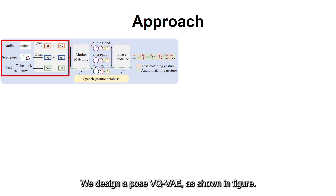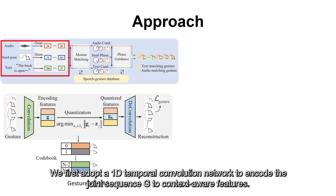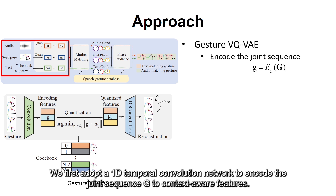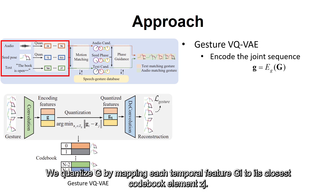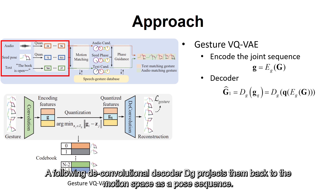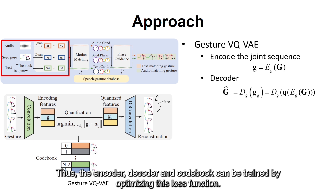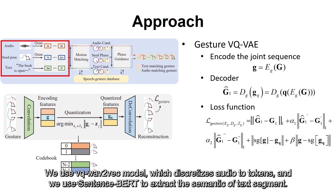We design a pose VQVAE as shown in the figure. We first adopt a 1D temporal convolution network to encode the joint sequence G to context-aware features. We quantize G by mapping each temporal feature G_i to its closest codebook element Z_j. A following convolutional decoder D_G projects them back to the motion space as a pose sequence. The encoder, decoder, and codebook are trained by optimizing a loss function. We use the VQ-WAV2VEC model which discretizes audio to tokens, and we use Sentence-BERT to extract the semantics of text segments.